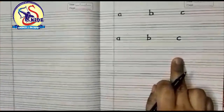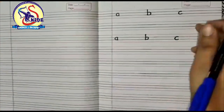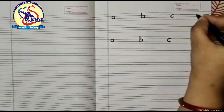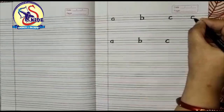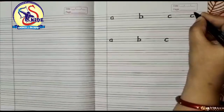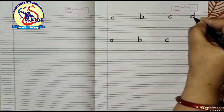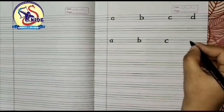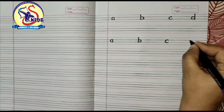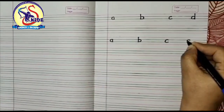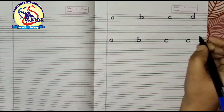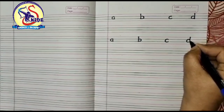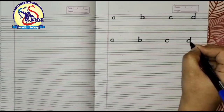Now we are going to write small d. Start from the middle and draw a small c. Then go to the top and make a standing line. Again start from the middle, make a small c, then go to the top and make a standing line to the bottom.